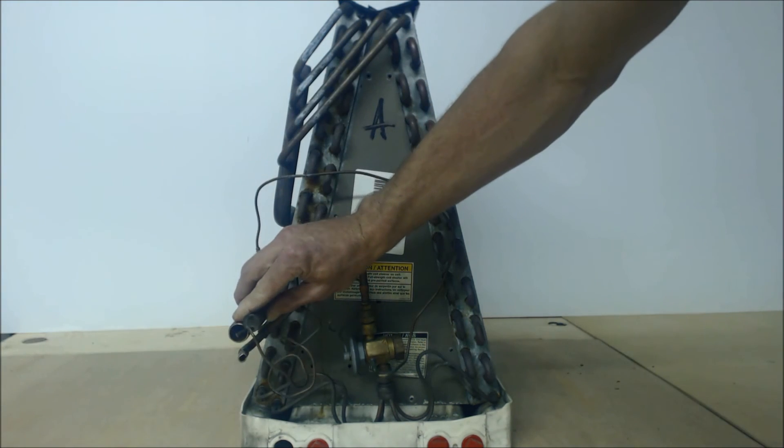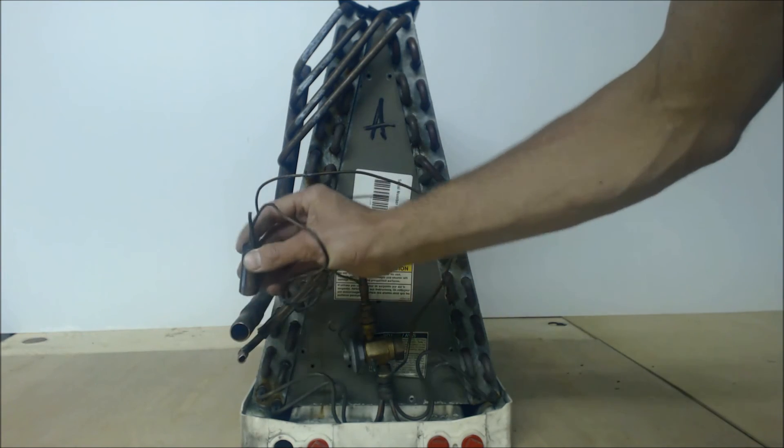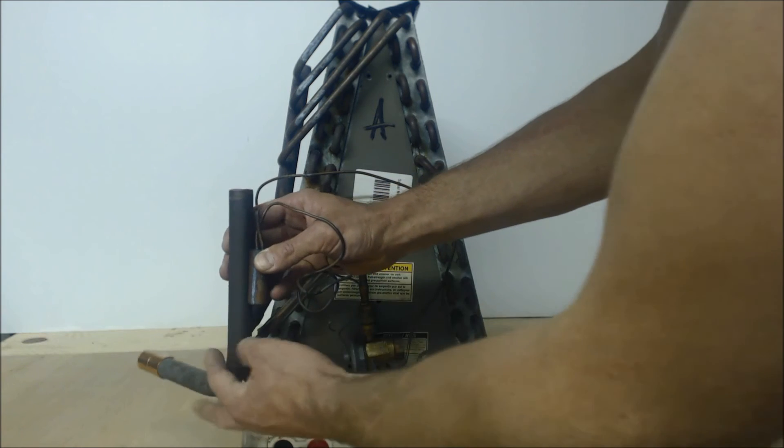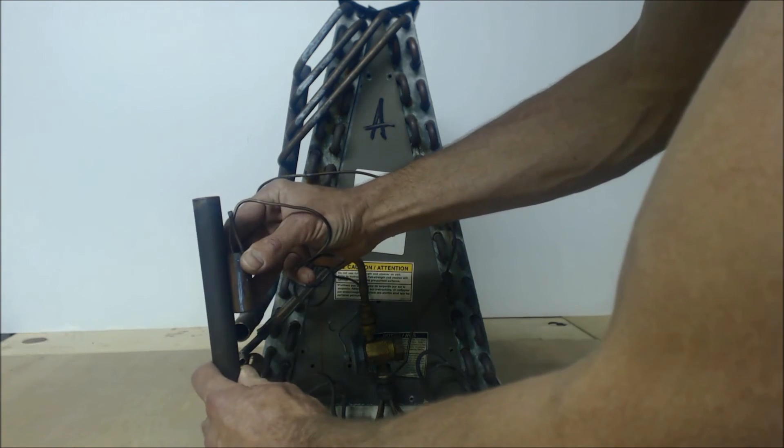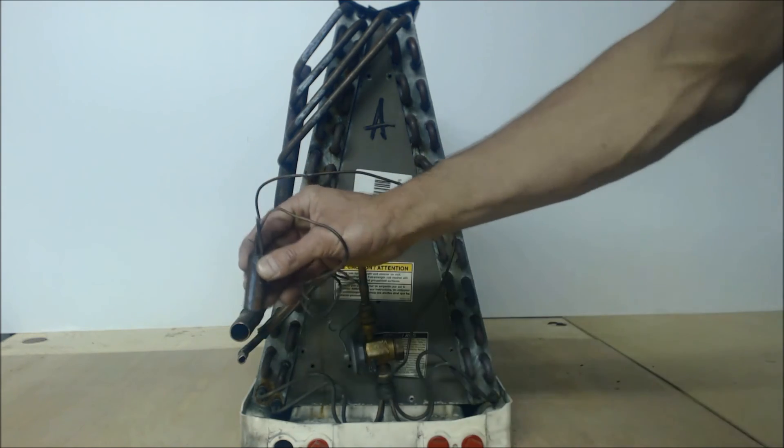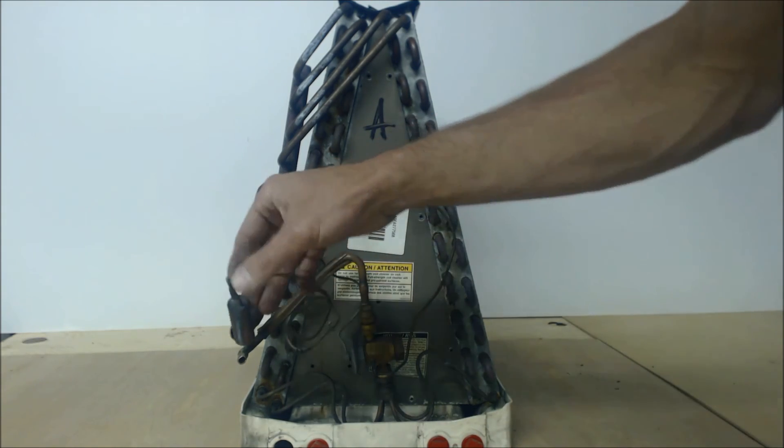Or if you're going to have to mount it vertically, you can mount it vertically like this, and you strap it on with copper straps or you can use stainless steel hose clamps. But you've got to make sure that you do not over-tighten that stainless steel hose clamp.